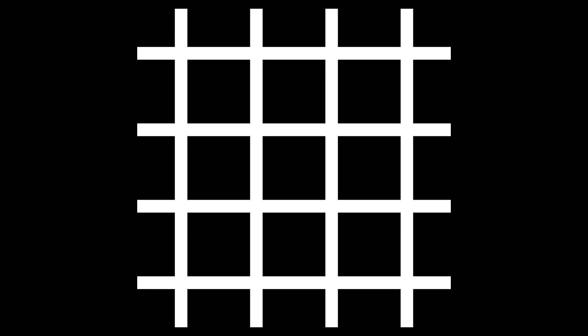Hermann Grid Illusion. Ghost-like gray blobs seem to appear in the white intersections, but only if you don't directly look at them.